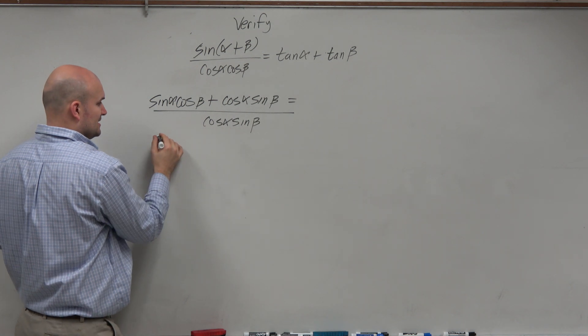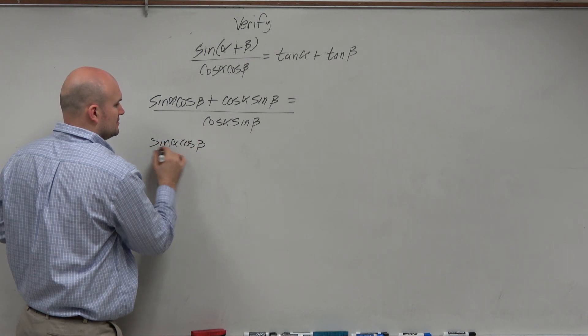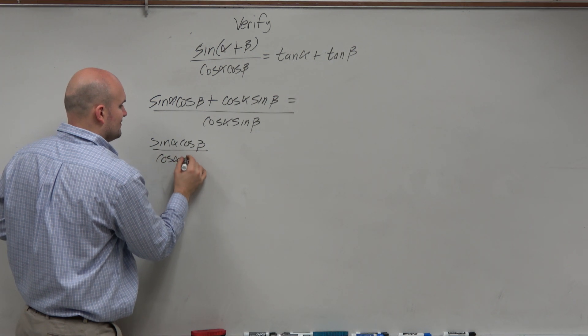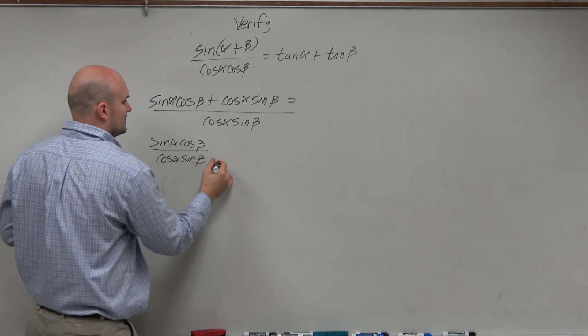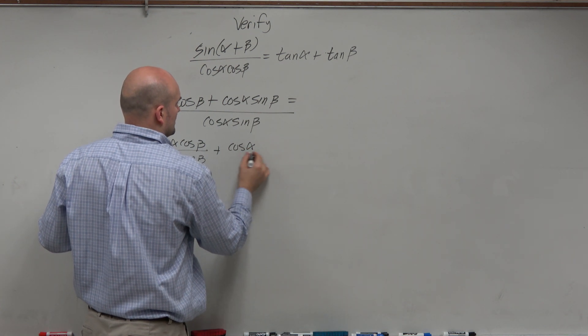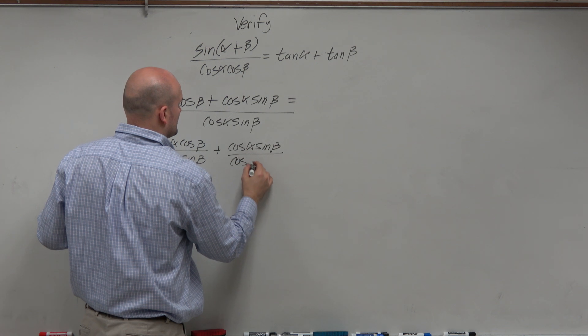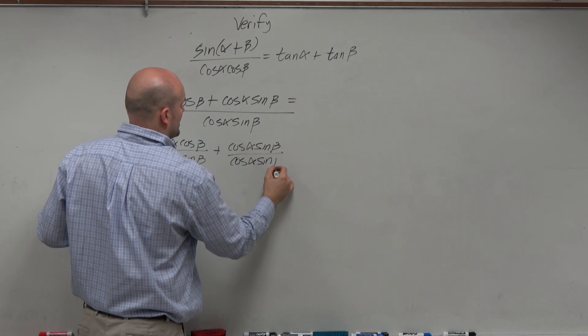Now, I could distribute this, right? Sine of alpha cosine of beta over cosine of alpha sine of beta plus cosine of alpha sine of beta over cosine of alpha sine of beta.